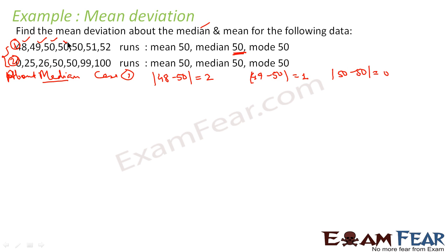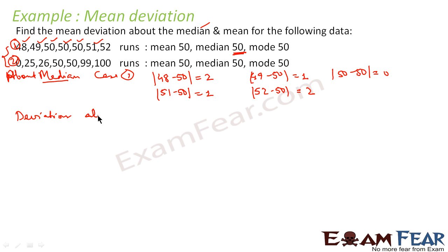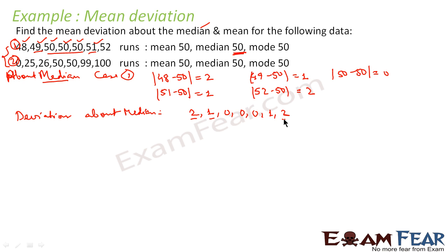Similarly: mod of 49 minus 50 equals 1; mod of 50 minus 50 equals 0 (appearing 3 times for the three 50s); mod of 51 minus 50 equals 1; mod of 52 minus 50 equals 2. So the deviations about median are: 2, 1, 0, 0, 0, 1, 2.